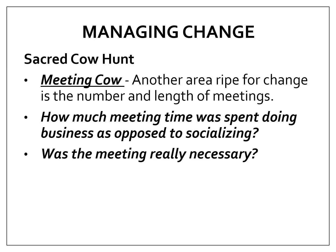The next type of sacred cow is the meeting cow — the number and length of meetings. You need to ask questions like: how much meeting time was spent doing business as opposed to socializing? If you wasted one hour socializing, that hour could have been dedicated to more important things. Ask yourself: was the meeting really necessary? Is there a need to go to the office or be online for this meeting? Or could that meeting simply be an email?